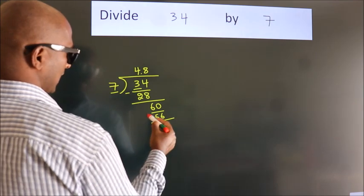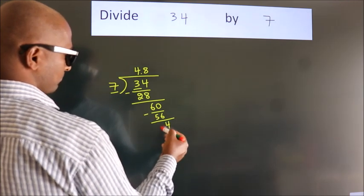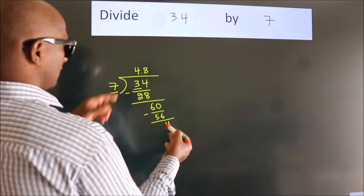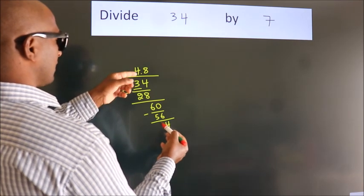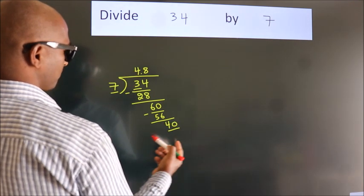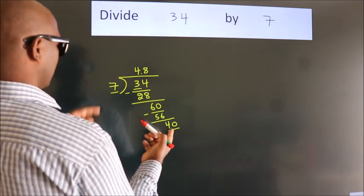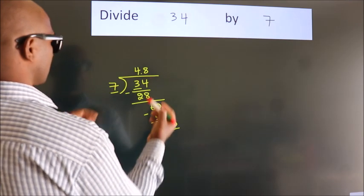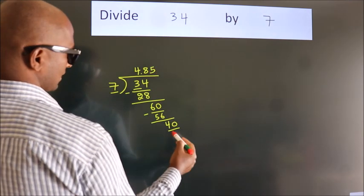Now we subtract and get 4. After this, we already have the decimal, so directly take 0, giving us 40. A number close to 40 in the 7 table is 7×5=35.